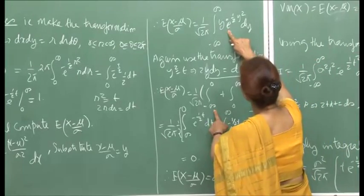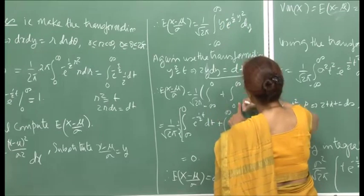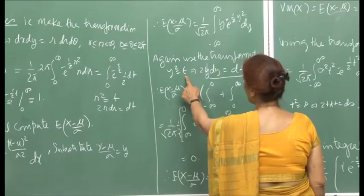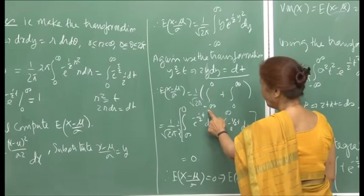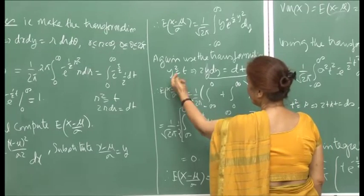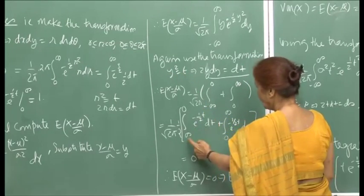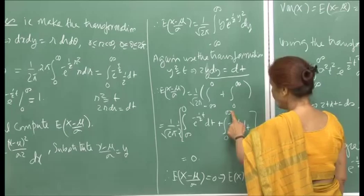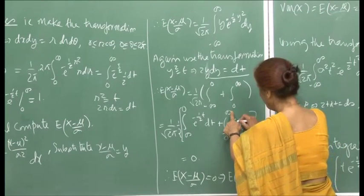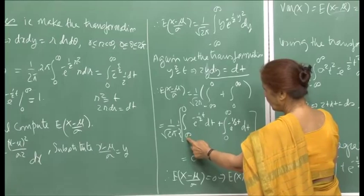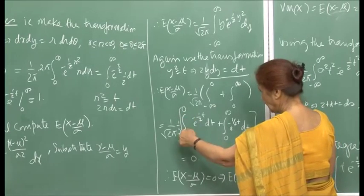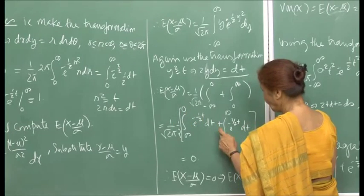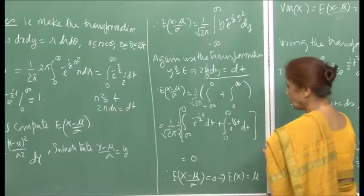What I am doing is breaking up this integral from minus infinity to 0 plus 0 to infinity. When you make the transformation y squared = t, when y is minus infinity, the square will be plus infinity. So this goes from infinity to 0, and the integral will be e to the minus half t. It is the same integral, except that the limits are upside down. When you change the limits, it becomes a minus sign, so there will be a minus sign and the same integral with a plus sign. When you add, the result is 0.